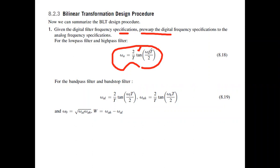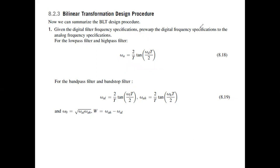Omega D is the digital frequency which will be given, and you have to pre-warp it to get the corresponding analog frequency. Why analog? Because it's the analog filter that we design first. In the case of band pass filters, you will have two parameters: the lower and the upper cutoff frequencies. You also need the bandwidth — the larger frequency minus the smaller frequency — and the center frequency, which is the square root of the minimum frequency multiplied by the maximum frequency.